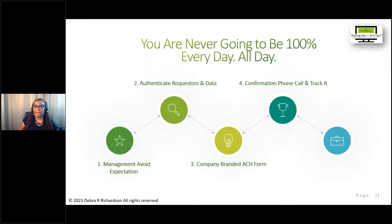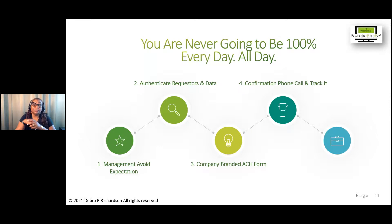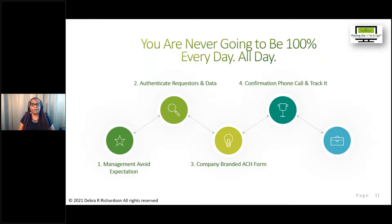Tip four is the confirmation phone call, recommended everywhere. Confirm with the vendor using information already on the vendor record — not from the email request — and preferably with a contact who did not initiate the request. Those who actually do this step know it's much harder in practice because vendors don't always answer on the first call. You need to track it, maintain a confirmation log, and capture the attempts. This log can be used for follow-up calls and for management to track pending requests before they exceed stated turnaround times.